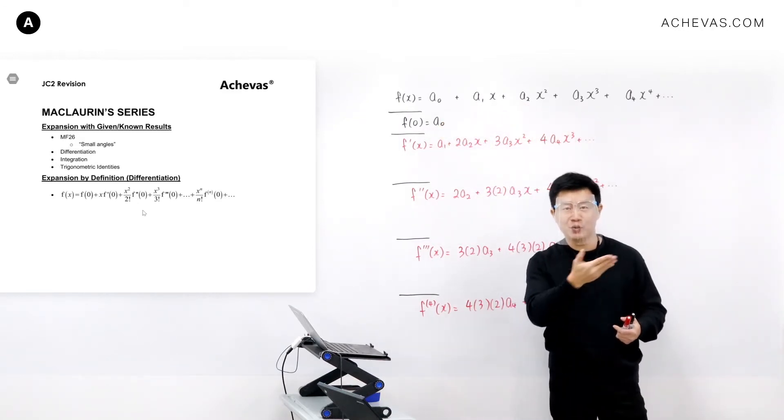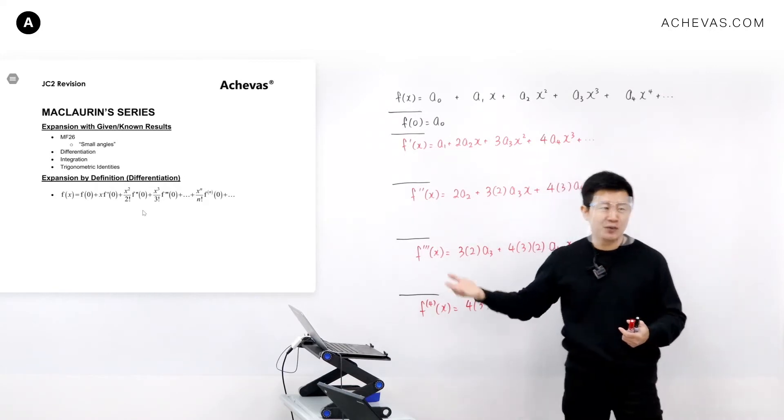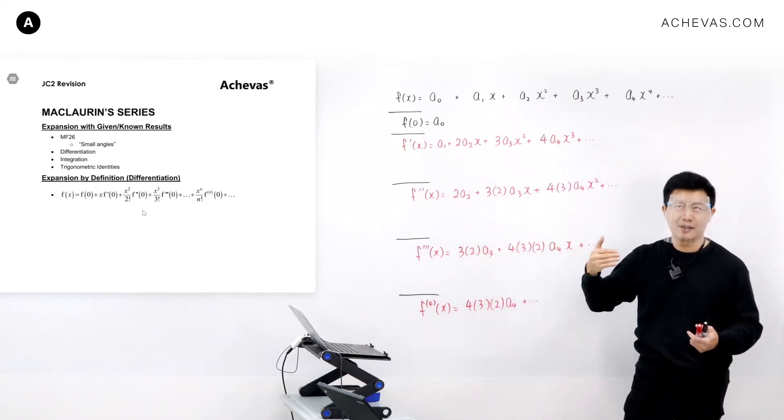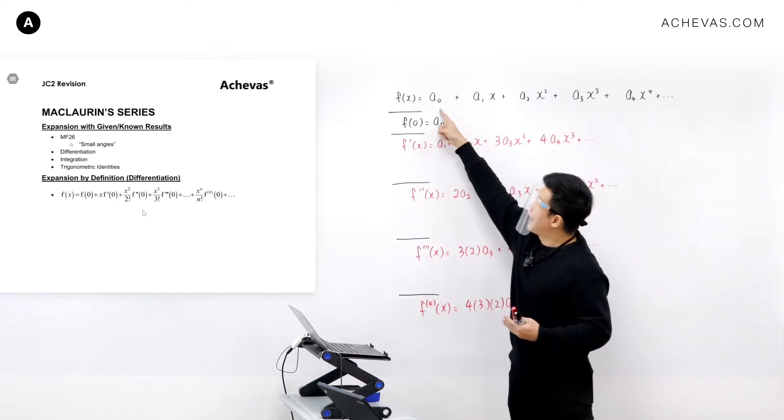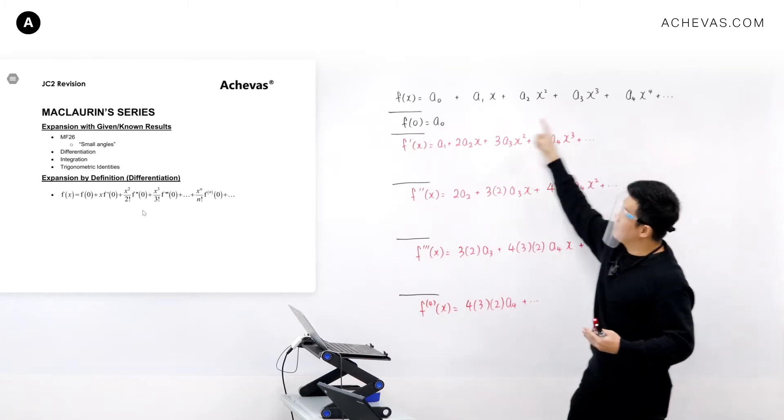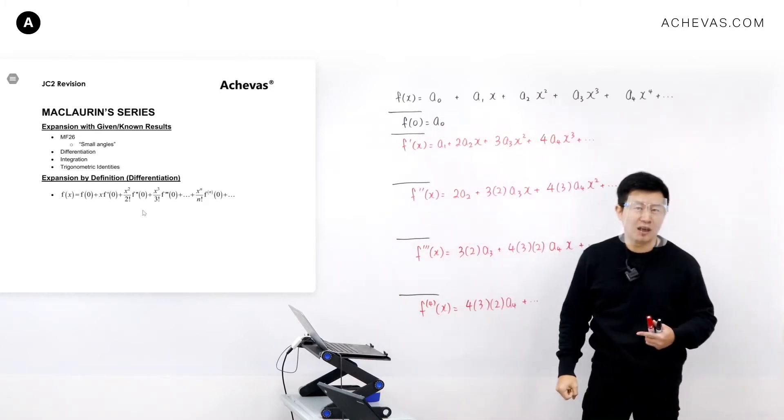Together with some of you last year when we were doing Maclaurin's, I didn't even present the formula. I was asking you guys, can you help me to see how, if I were to tell you that this is my aim, how do you think you can find a0?